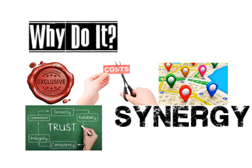Another advantage of backwards vertical integration is the ability to control costs. If you buy your supplier, you can control the cost of inputs. Suppliers typically put a markup on their goods when selling to retailers, but by acquiring or merging with the supplier you remove that markup — meaning you get cheaper products from the supplier because they're now part of your company.